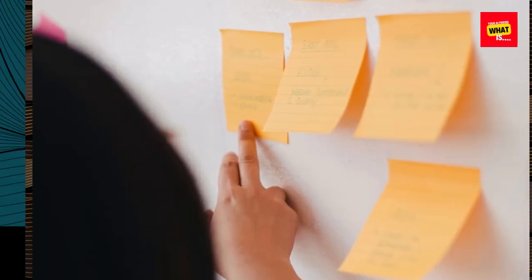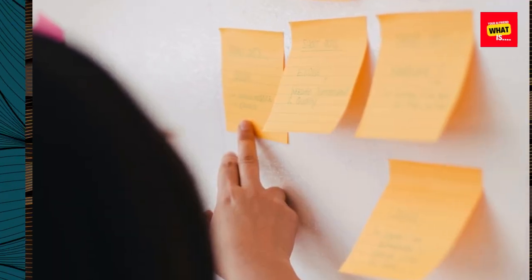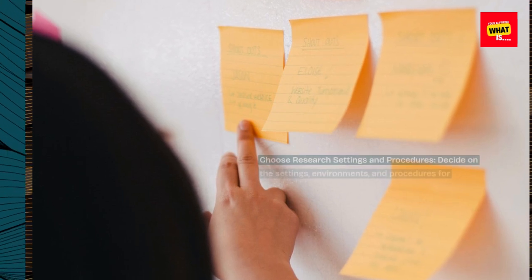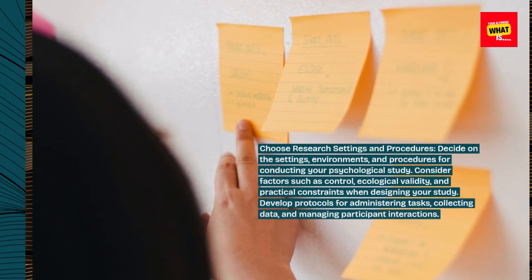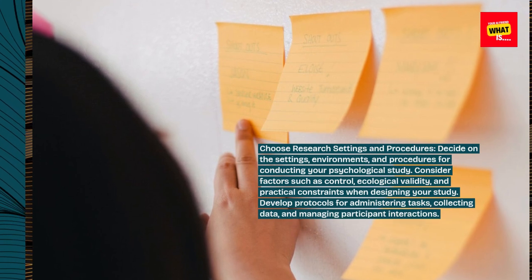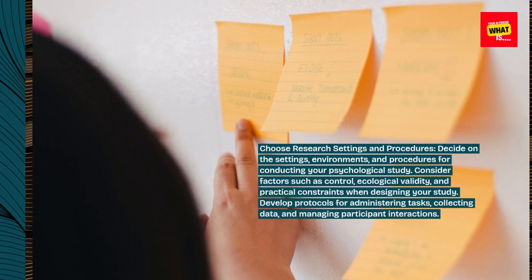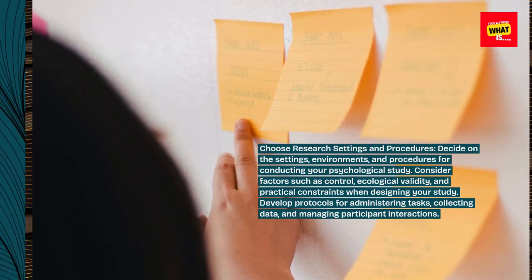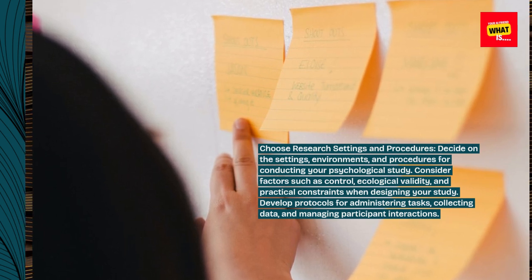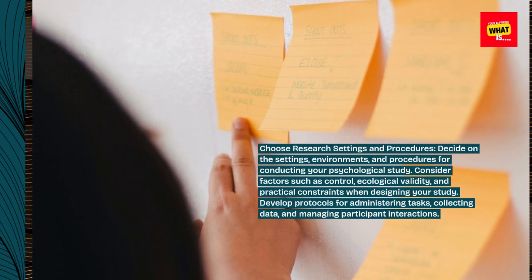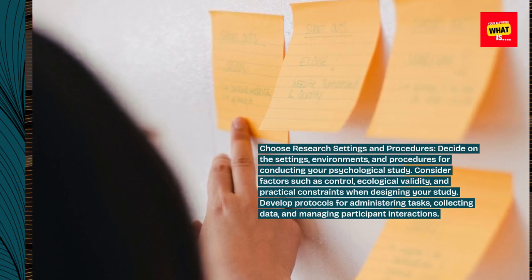Choose research settings and procedures. Decide on the settings, environments, and procedures for conducting your psychological study. Consider factors such as control, ecological validity, and practical constraints when designing your study. Develop protocols for administering tasks, collecting data, and managing participant interactions.